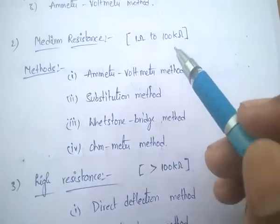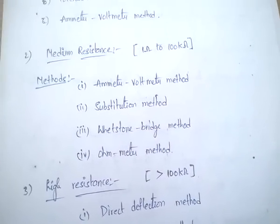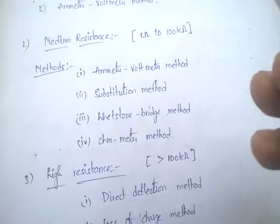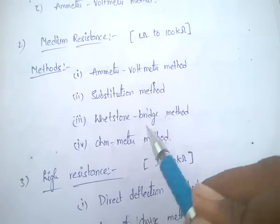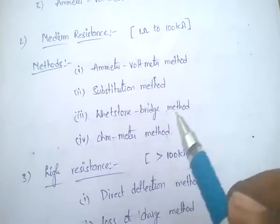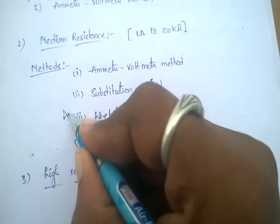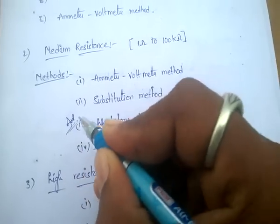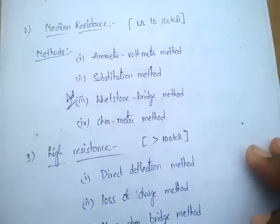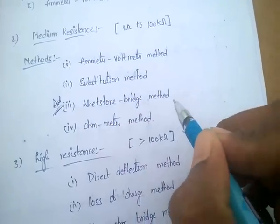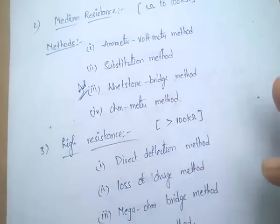Next, medium resistance measuring methods. They are: ammeter-voltmeter method, substitution method, Wheatstone bridge method, and ohmmeter method. Wheatstone bridge is very important — there is a chance to ask this bridge. Wheatstone bridge method is used to measure medium resistance.